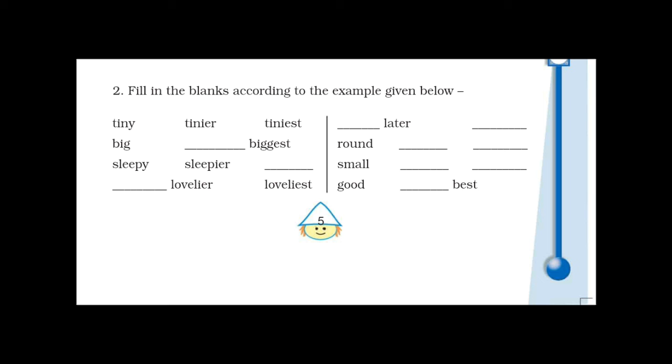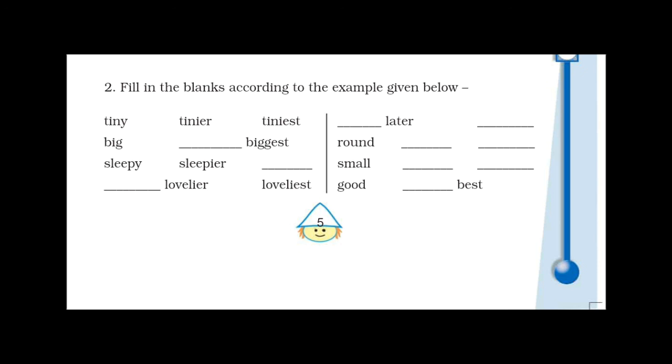First is the positive, then comparative, then superlative. Tiny means small. Tinier is comparative, it means smaller. Tiniest is superlative. Let's see the next.